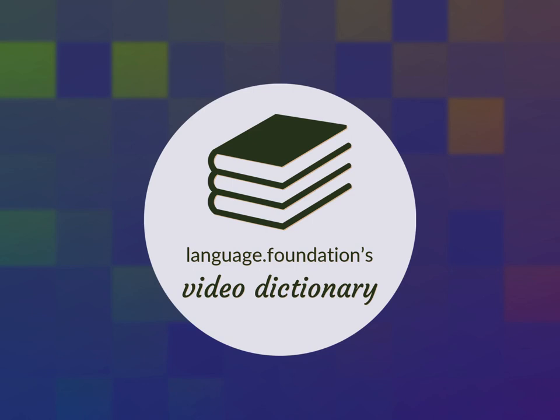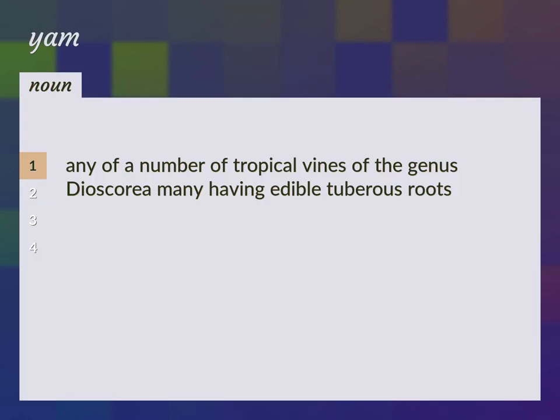Language Foundations Video Dictionary — helping you achieve understanding. Any of a number of tropical vines of the genus Dioscorea, many having edible tuberous roots.